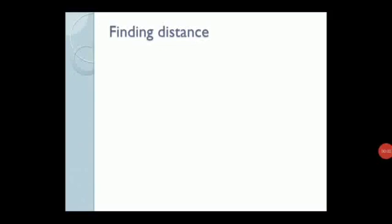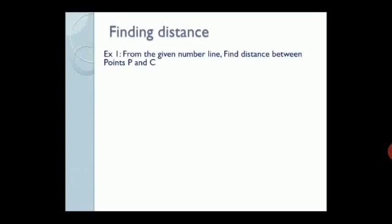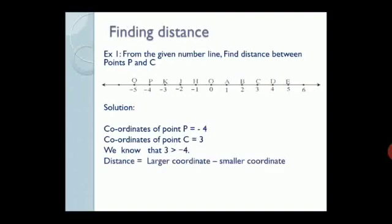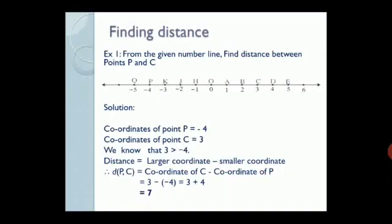Let us see a few examples of finding the distance between two points. From the given number line, find the distance between points P and C. To find the distance, first we have to find their coordinates. The coordinate of point P is negative 4 and the coordinate of point C is 3. We know that 3, which is a positive number, is greater than the negative number, that is negative 4. Therefore, distance PC is equal to coordinate of C minus coordinate of P, which is equal to 3 minus negative 4, which is 3 plus 4. So the distance PC is 7 units.